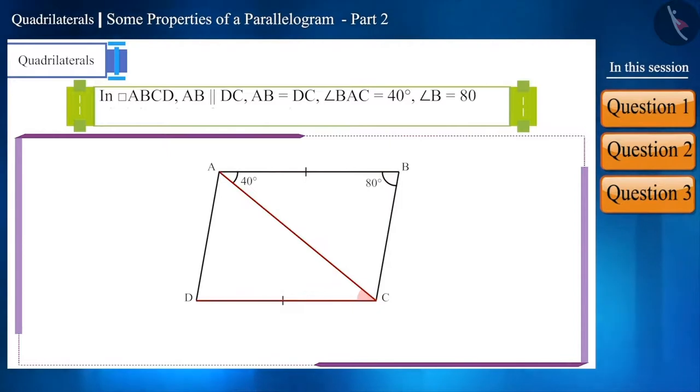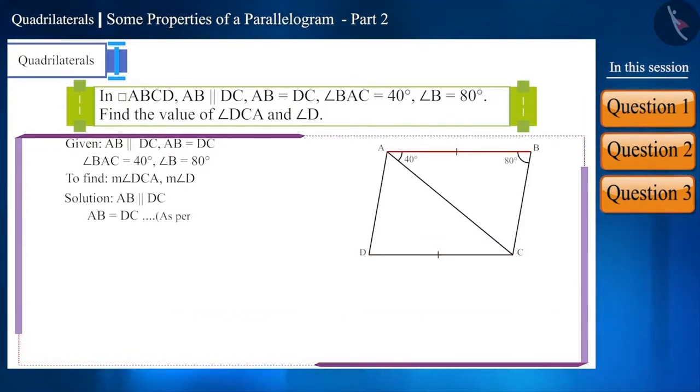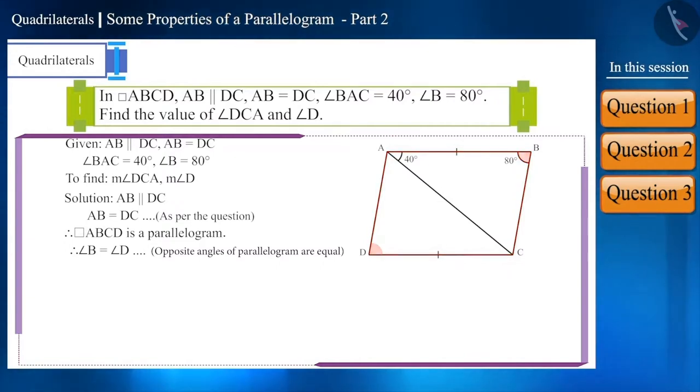Friends, we know that when a pair of opposite sides of a quadrilateral is equal and parallel, then that quadrilateral is a parallelogram. According to the question, side AB is equal and parallel to the side DC. Therefore, quadrilateral ABCD is a parallelogram. So, angle B will be equal to angle D because the opposite angles of parallelogram are equal. So, angle D will also be 80 degrees.